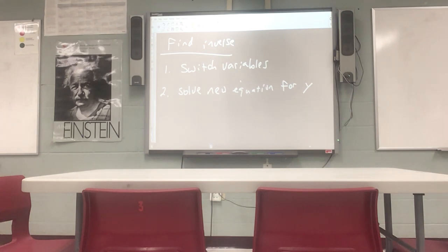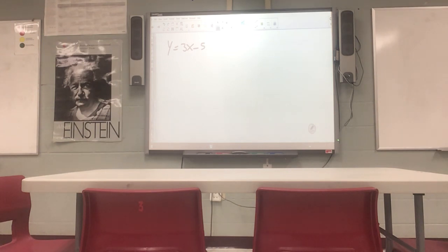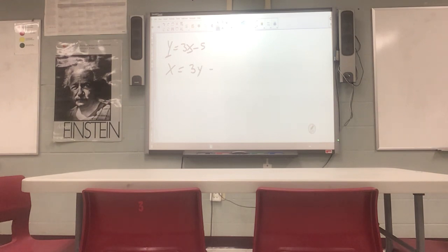Step two, solve the new equation for y — it has letters under it because sometimes it takes more than one step to solve for y. We'll switch the variables and then solve the new equation for y. So if I gave you a function that said y equals 3x minus 5, that's a pretty easy line in mx plus b form. You could graph that — slope is 3, y-intercept is negative 5. Step one: we're going to switch the variables, so instead of y equals we write x equals, and instead of x we write y.